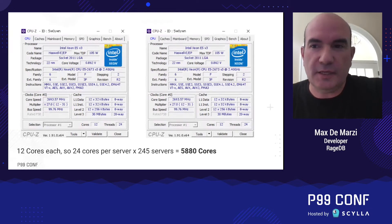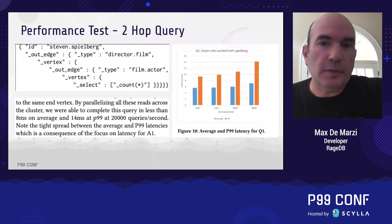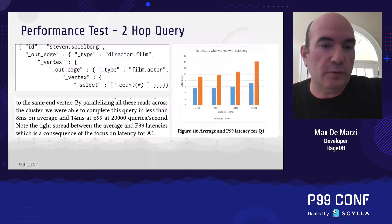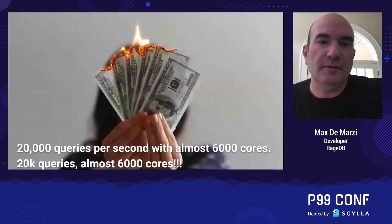Can you imagine the kind of performance they got? Well, you don't have to imagine, because the paper actually tells us. They performed a two-hop query — imagine going to Steven Spielberg, then to the movies he directed, then the actors who were in those movies, and getting a count. When they ran their test, they managed to get 20,000 queries per second.